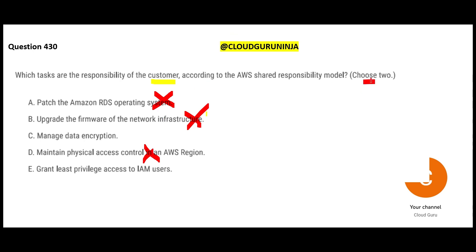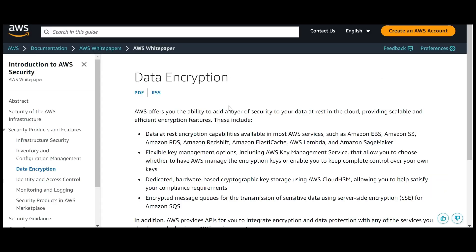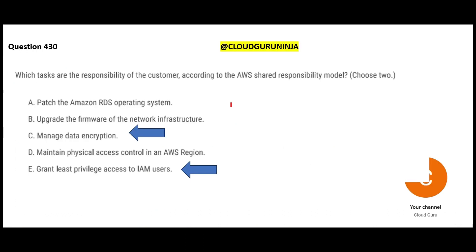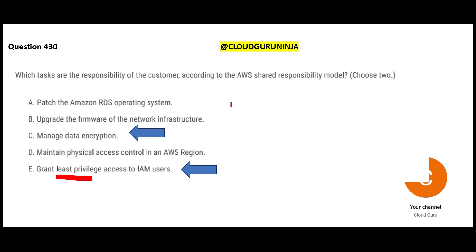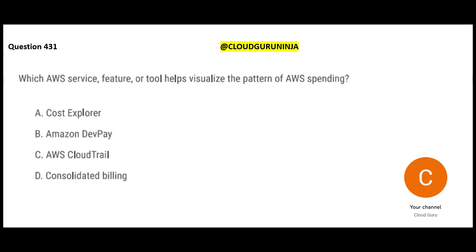So those three are wrong. We have to choose two answers. Our two correct answers are: managing data encryption - meaning you can encrypt data at rest or in transit so nobody can read it even if intercepted - and applying least privilege best practices, meaning if someone needs access they are given only the minimum required access, just like a visitor is restricted to the reception area and cannot access other floors or departments.